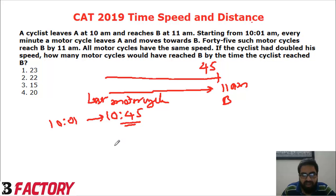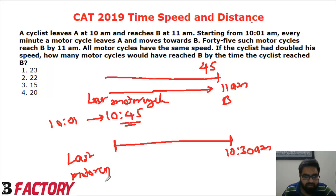Now, if the cyclist doubled his speed, he would reach at 10:30. How many motorcycles would reach B by the time the cyclist reached B? That means the last motorcycle will start at 10:30 minus 15 minutes, which is 10:15.